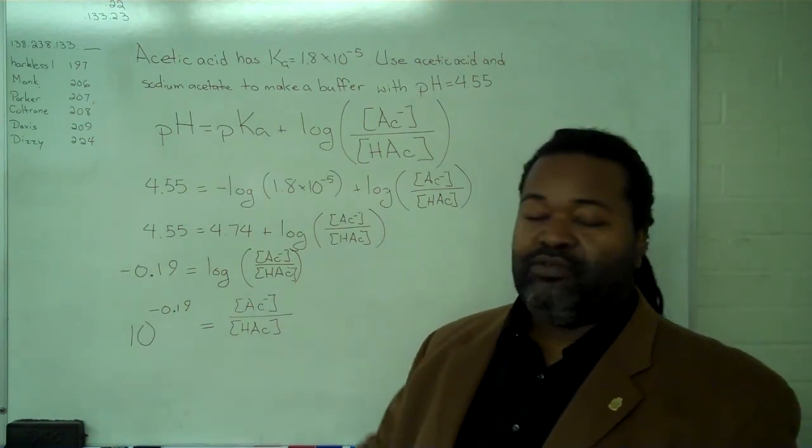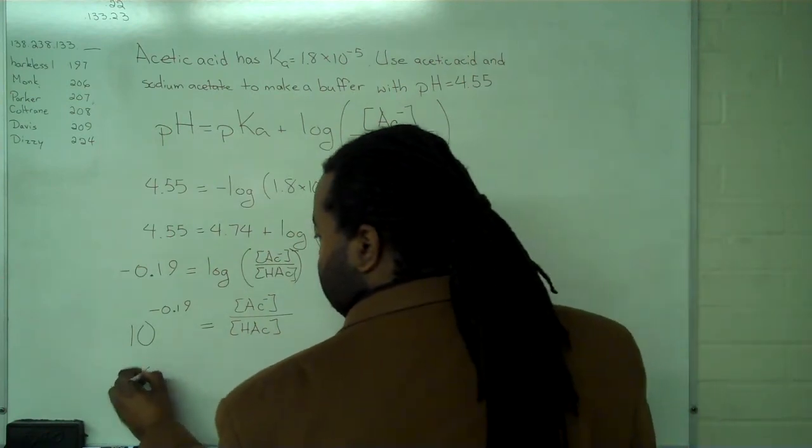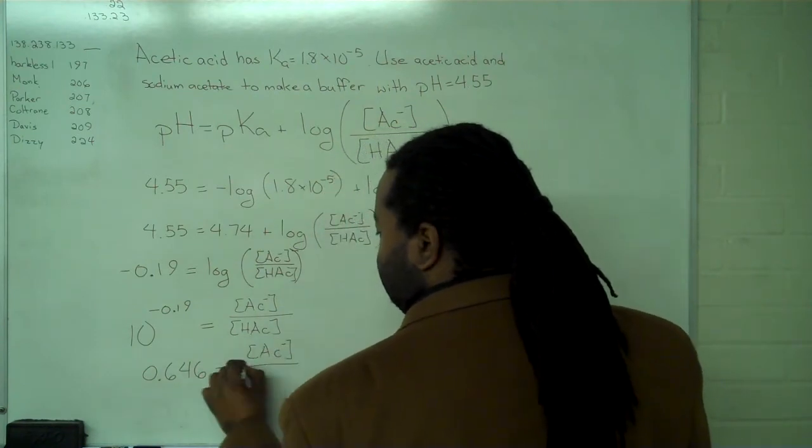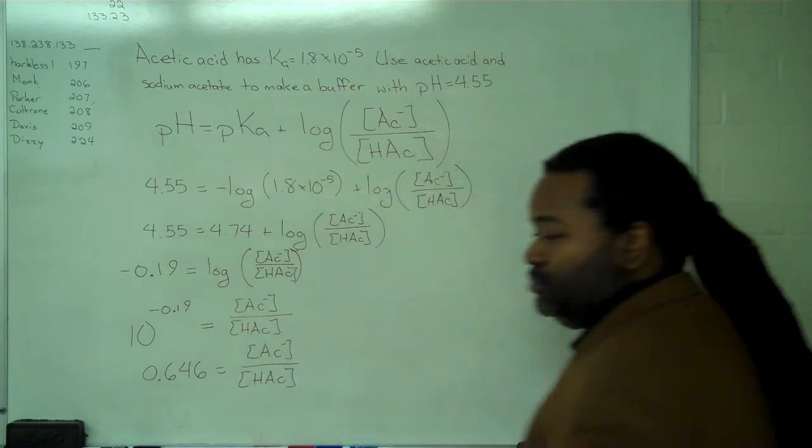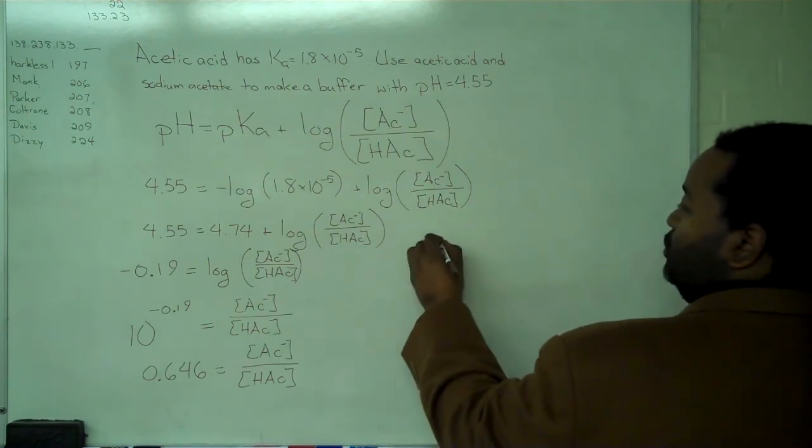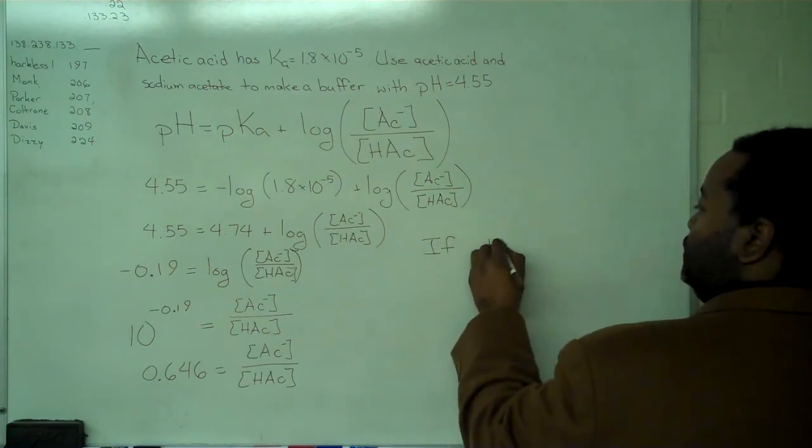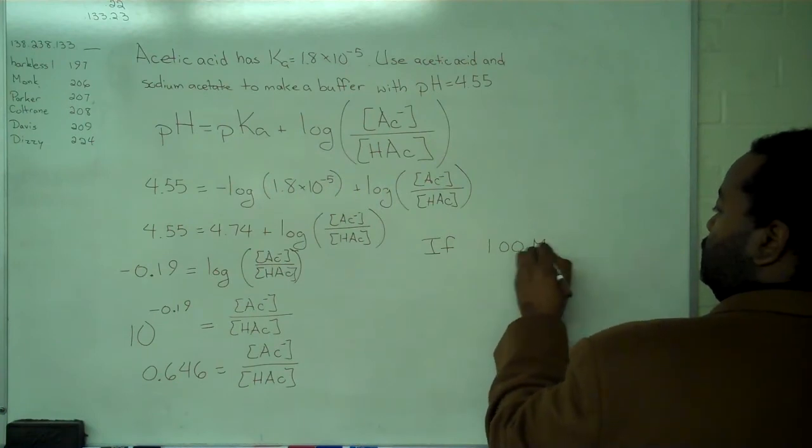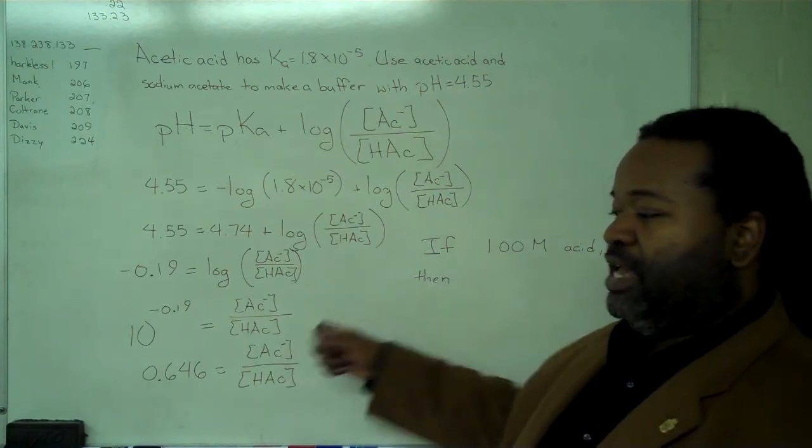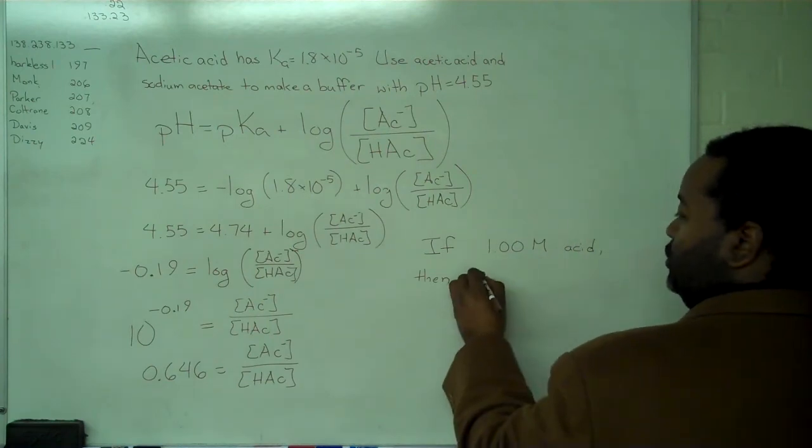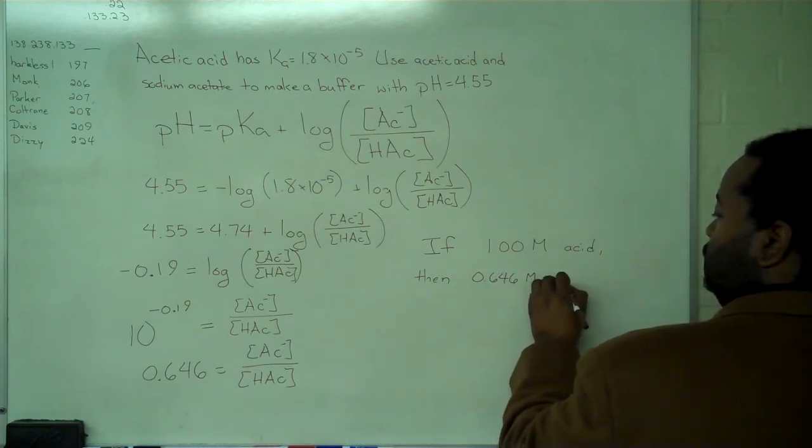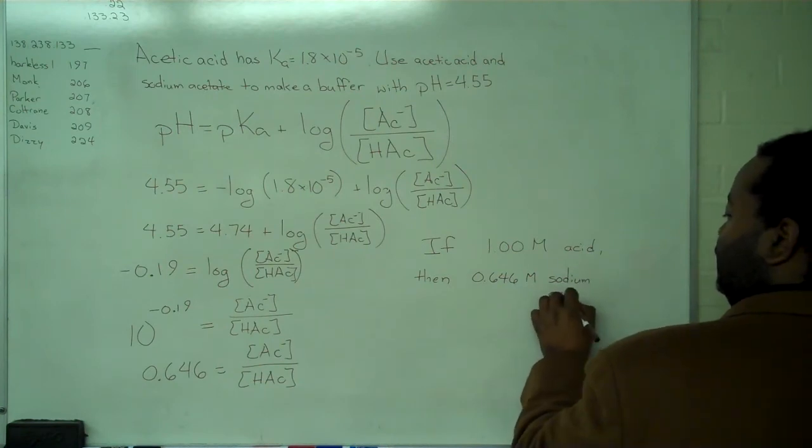Evaluating this expression gives us 0.646 as the ratio of acetate ion to acetic acid. With this proper ratio, suppose we have an acetic acid concentration of 1 molar. We can then determine the sodium acetate concentration needed: 0.646 molar sodium acetate.